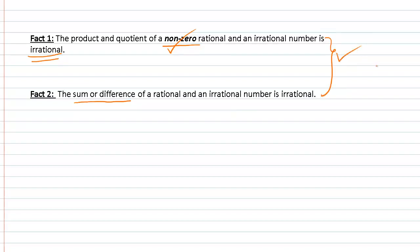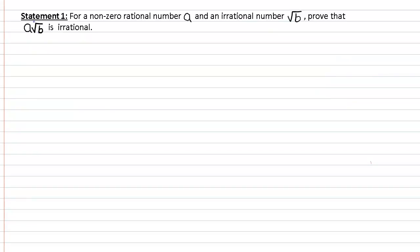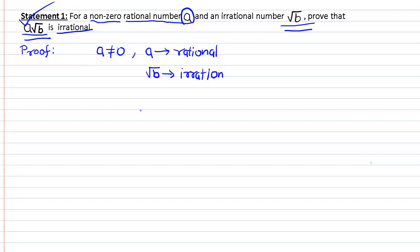So these are the two facts we know. Now in this video we will prove some statements based on these two facts. The first statement we are going to prove is: for a nonzero rational number a and an irrational number √b, a multiplied by √b will be irrational.